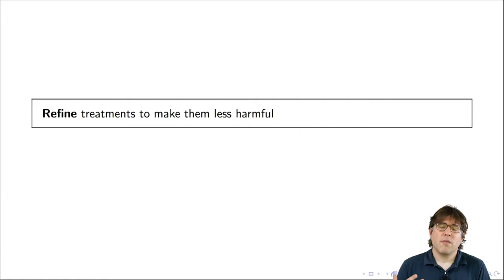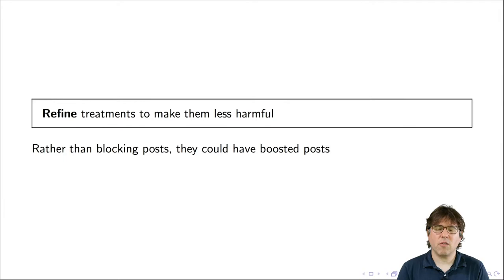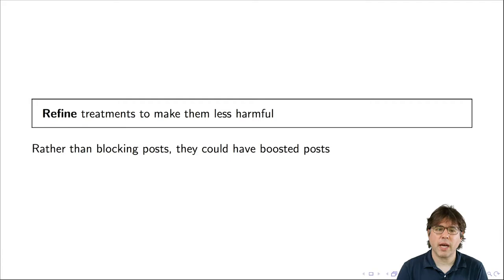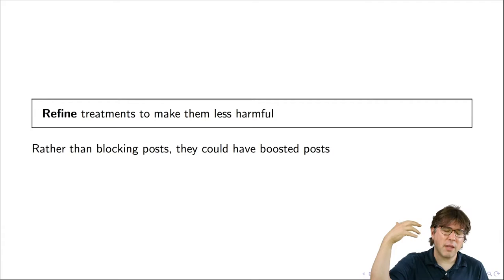The second R is Refine — refining treatments to make them less harmful. In animal experiments you wouldn't want unnecessary suffering, and likewise with human experiments. In the context of emotional contagion, they were blocking posts. One criticism was that people could have missed important posts that were randomly blocked. An alternative would have been a boosting design — boosting posts with positive or negative words — so that the posts knocked out of the feed would be the marginal ones near the bottom, not the ones Facebook thought were most important. A boosting design rather than a blocking design might have been less harmful.